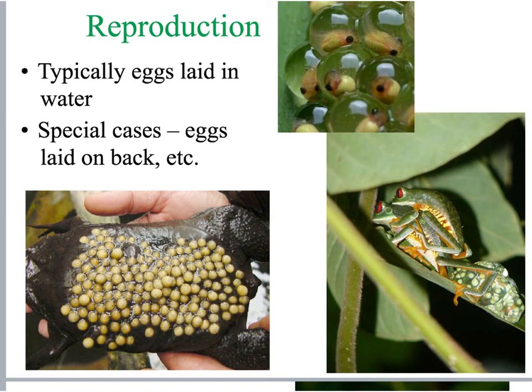A vestige of the amphibian, and in particular the frog, being dependent on its aquatic environment is the fact that they need to lay their eggs in the water. They are tied to the water because their reproductive cells need water in order to develop. Egg cases can also be laid on the backs of certain frogs. So frogs are very dependent on the water, although they are primarily land-dwelling creatures.